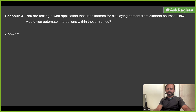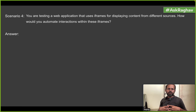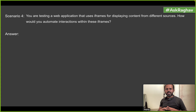That is how you handle JavaScript alerts, pop-up boxes, and confirmation boxes with Selenium. Coming to the last scenario: you are testing a web application that uses iframes for displaying content from different sources. How would you automate interaction with these iframes? iFrames are like a window within the main window of your web application, where data from external sources can be shown.